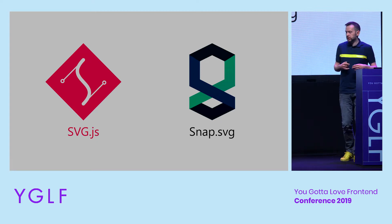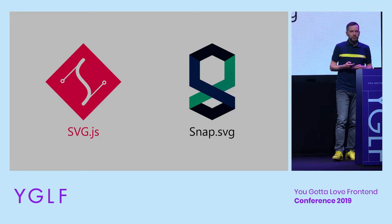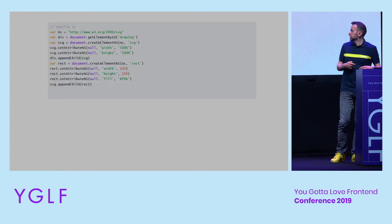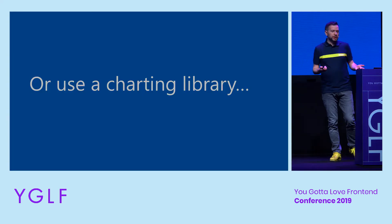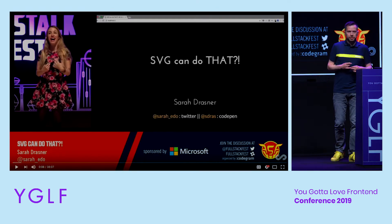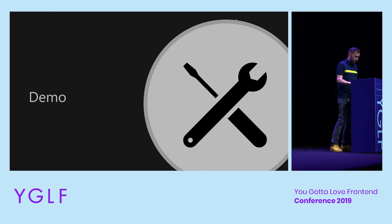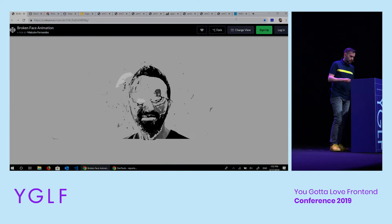Working with SVG directly is quite verbose and complicated, but there are libraries to help, like svg.js and snap.svg. This is the code in vanilla JS, and this is the same result with svg.js. Or you can just use a charting library. If you want to see amazing things you can do with SVG and JavaScript, check out this talk by Sarah Drasner — it's amazing stuff. I'll show you just one short demo from there. This is all done with just JavaScript and SVG.